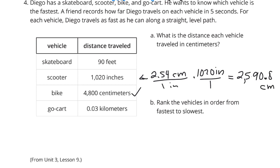Well, what about the skateboard? I know there's 12 inches in a foot. So if I multiply the 90 by the 12 inches in a foot, that gets me 1,080 inches. And then once again, if I multiply by 2.54 centimeters per inch, we get 2,000, get the comma right, 743.2 centimeters.